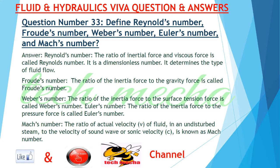Froude's number — the ratio of the inertial force to the gravity force is called Froude's number. Weber's number — the ratio of the inertial force to the surface tension force is called Weber's number. Euler's number — the ratio of the inertial force to the pressure force is called Euler's number. Mach's number — the ratio of actual velocity V of fluid in an undisturbed stream to the velocity of sound wave or sonic velocity C is known as Mach number.